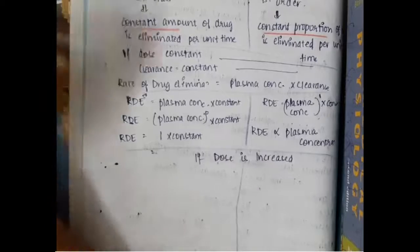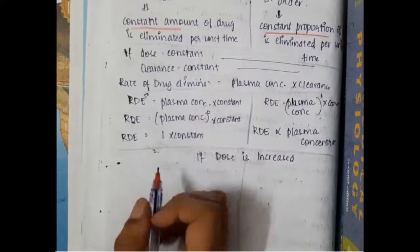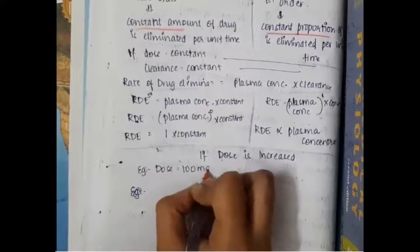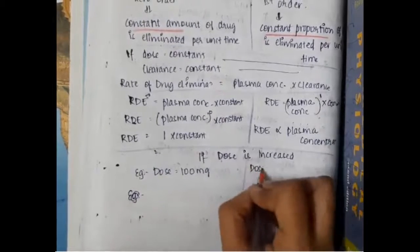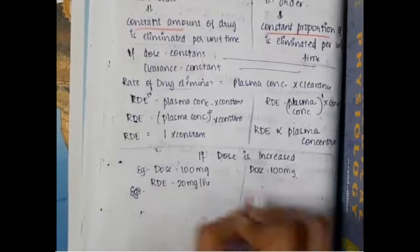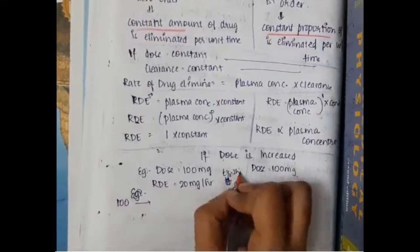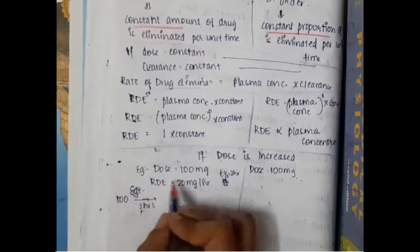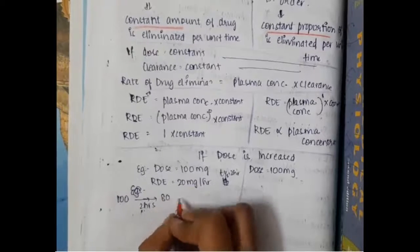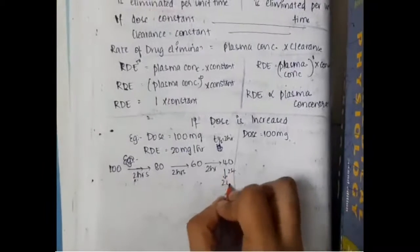For a zero-order reaction example with an arbitrary dose of 100 mg, a constant 20 mg of drug is eliminated per unit time. In the first 2 hours, 20 mg is eliminated so 100 mg becomes 80 mg; in the next 2 hours, 60 mg; then 40 mg. The half-life for 100 mg, the time for it to become 50 mg, is 5 hours.